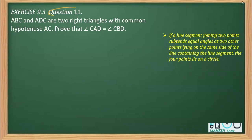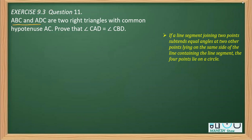This is question number 11 from exercise 9.3. The question says that ABC and ADC are two right triangles with a common hypotenuse AC, and we have to prove two of its angles are equal.